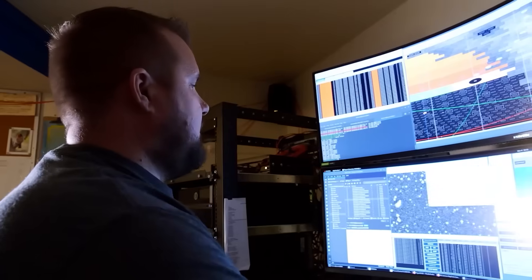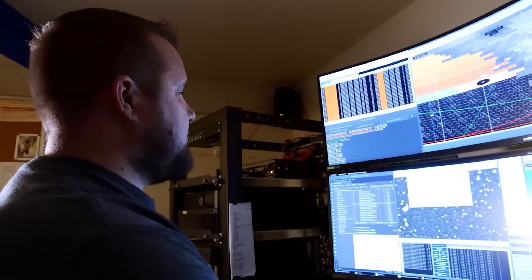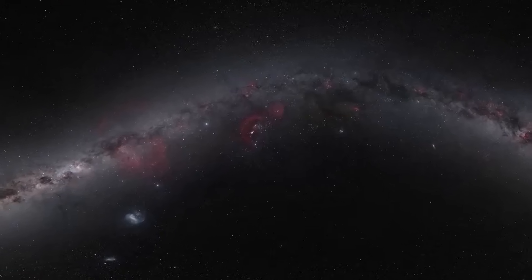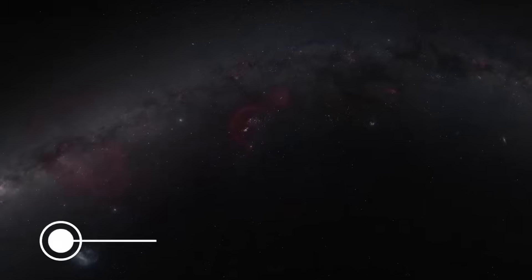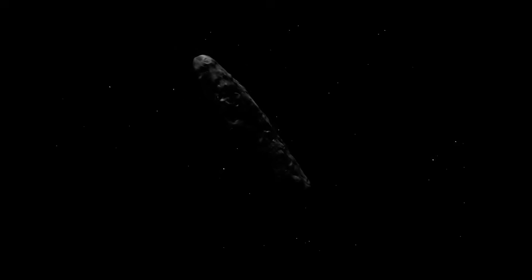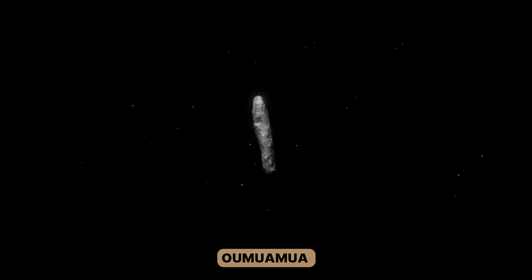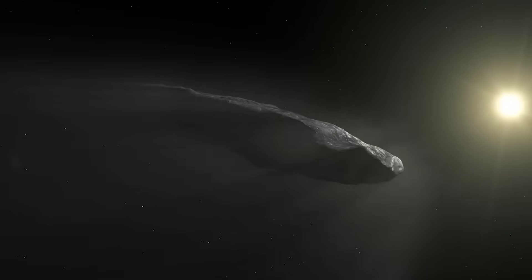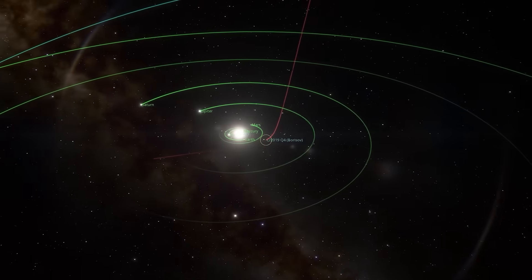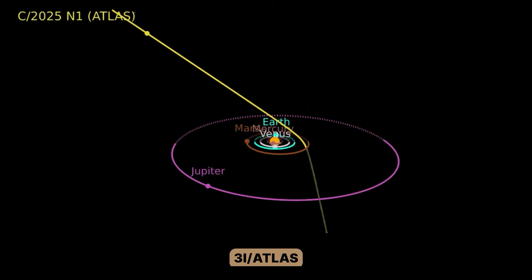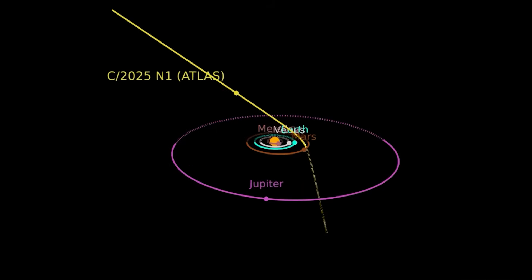The third visitor. Since astronomers started systematically watching the skies, only three confirmed objects from beyond our solar system have ever passed through our cosmic neighborhood. The first was Oumuamua in 2017, that strange, cigar-shaped rock that sparked endless debates. The second was Comet 2I Borisov in 2019, which looked and acted more like the comets we're used to seeing. Now we have 3I Atlas, and it's proving to be something entirely different from both its predecessors.